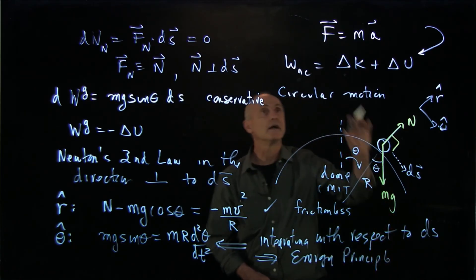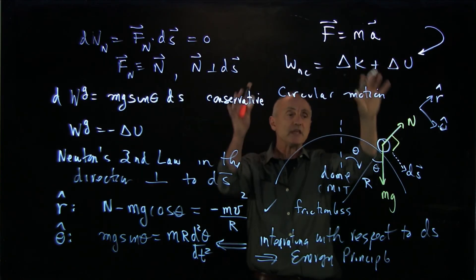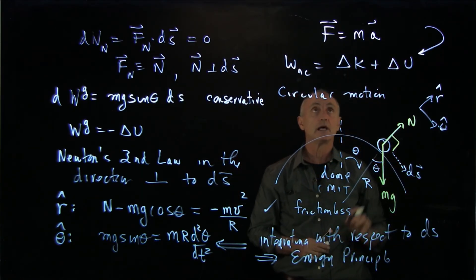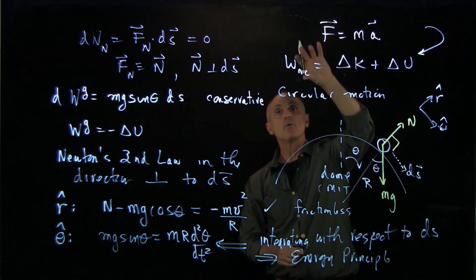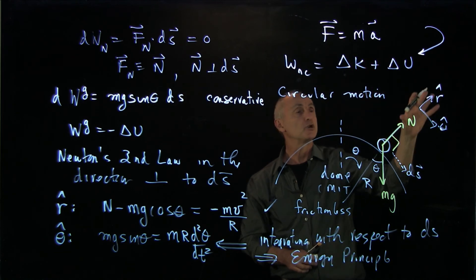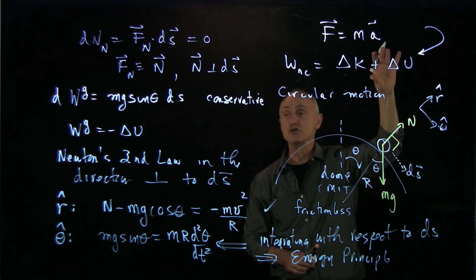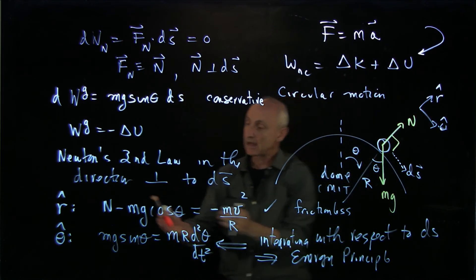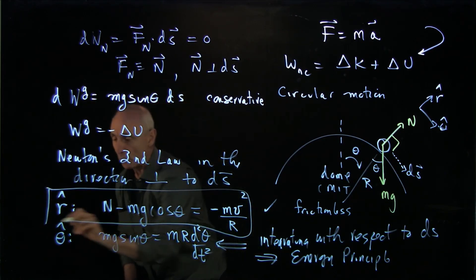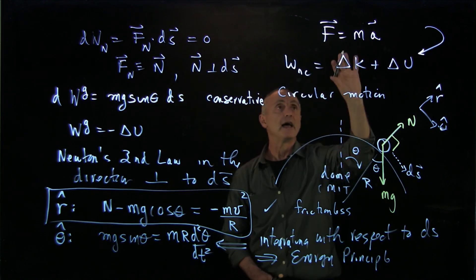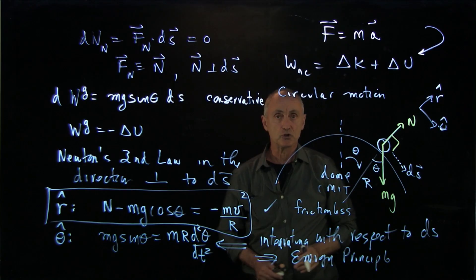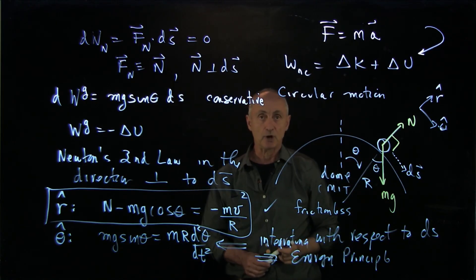So in summary, the energy principle is the integration of Newton's second law in the direction of motion, and we're completely missing the application of Newton's second law in the direction perpendicular to the motion. Energy does not account for that. And that's why we needed separately to apply both of the principles of energy and Newton's second law in the radial direction in order to figure out how to solve this problem.